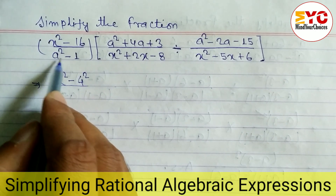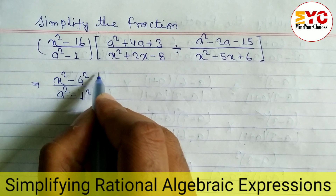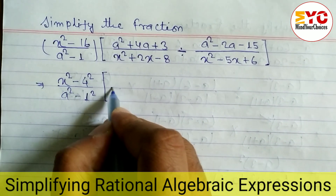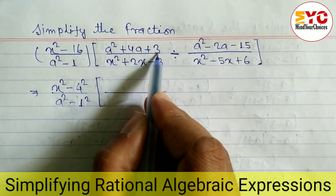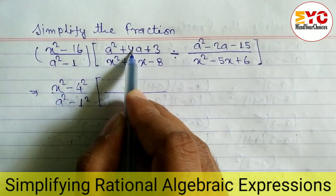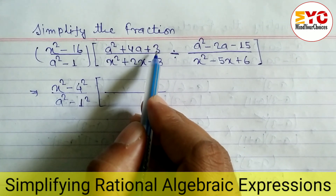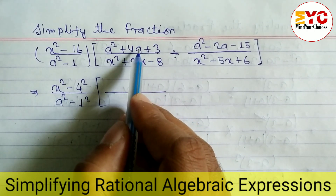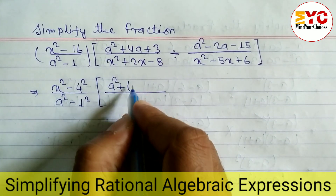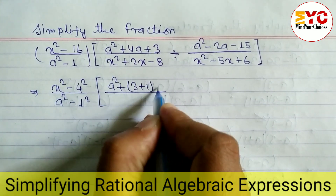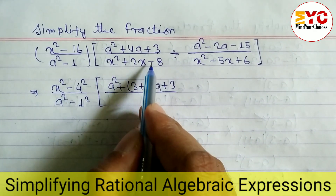In the denominator we have a squared minus 1, which we write as a squared minus 1 squared. The next term is in the form of a quadratic equation, so we factorize it: while multiplying we get 3, and while adding we get 4. The factors are 3 and 1, since 3 times 1 is 3 and 3 plus 1 is 4. So we write a squared plus 3 plus 1 times a, giving us a plus 3 in the denominator as well.